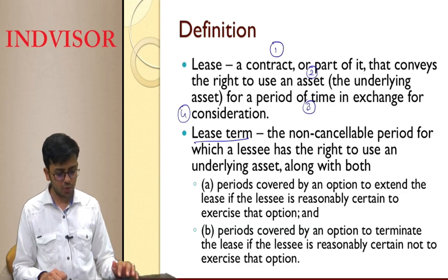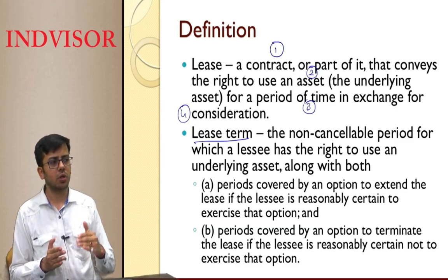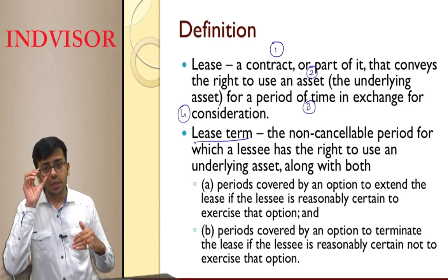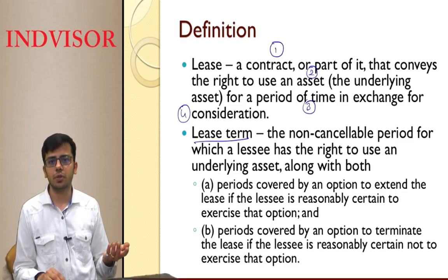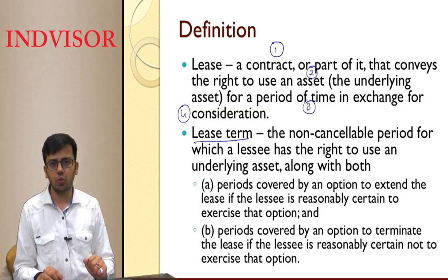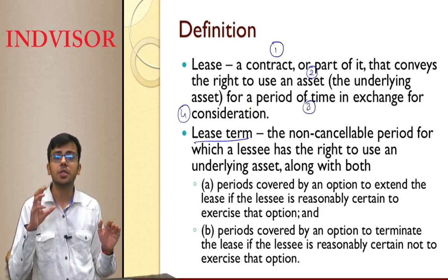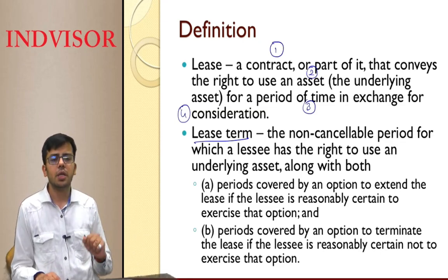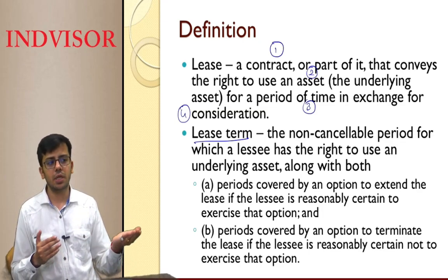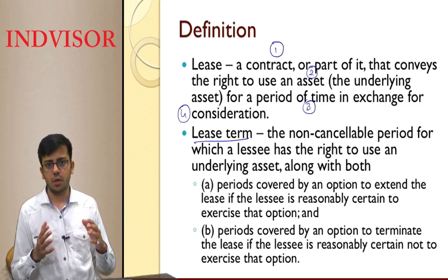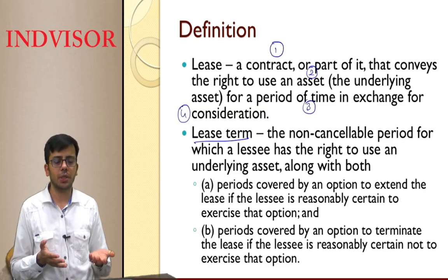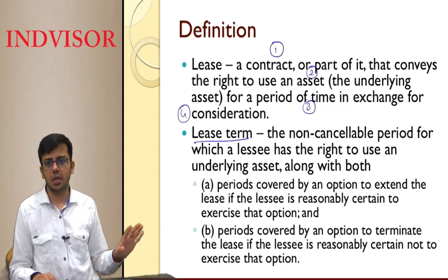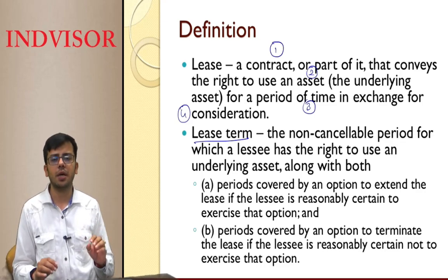What is lease term? The term period for which the contract is done must be non-cancellable. Suppose we take an asset on lease for 10 years with an option to extend by 2 years — if we expect to extend, we include those 2 years. If there is a termination clause and we plan to terminate 4 years early on a 10-year contract, we consider the lease term as 6 years, not 10.